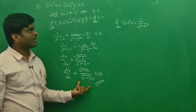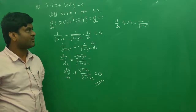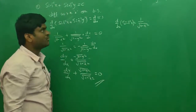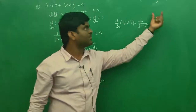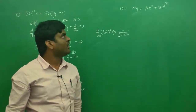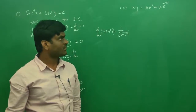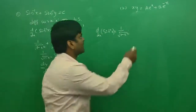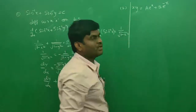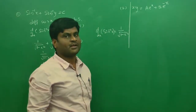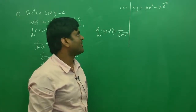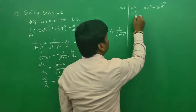By differentiating one time we obtained the differential equation without arbitrary constants. We used the formula d/dx of sin⁻¹x here. Now let us move to one more important problem which is frequently asked in exams: xy = ae^x + be^(−x). How many arbitrary constants are there? Two. So how many times do we differentiate? Two times.